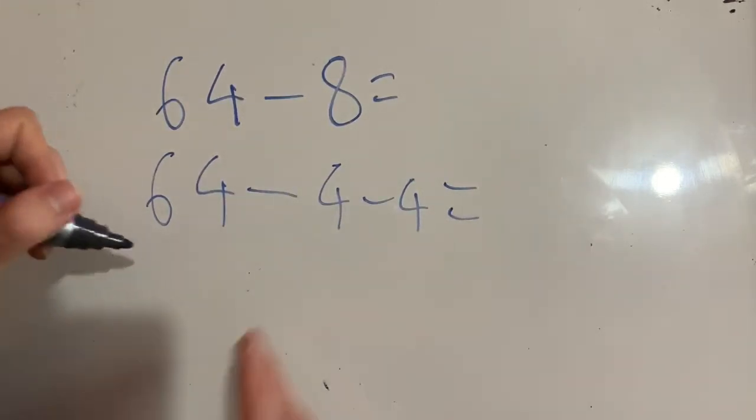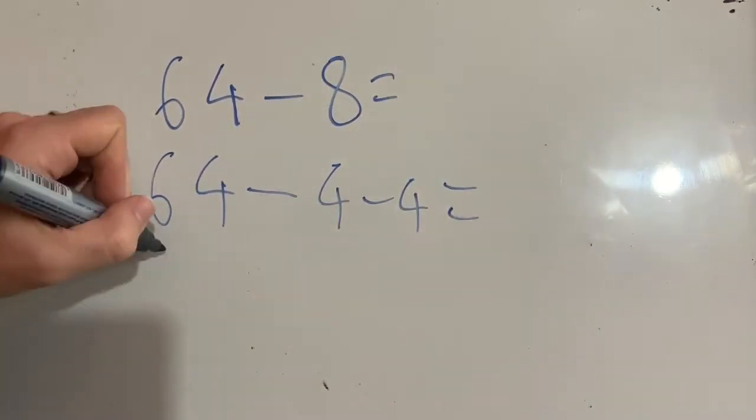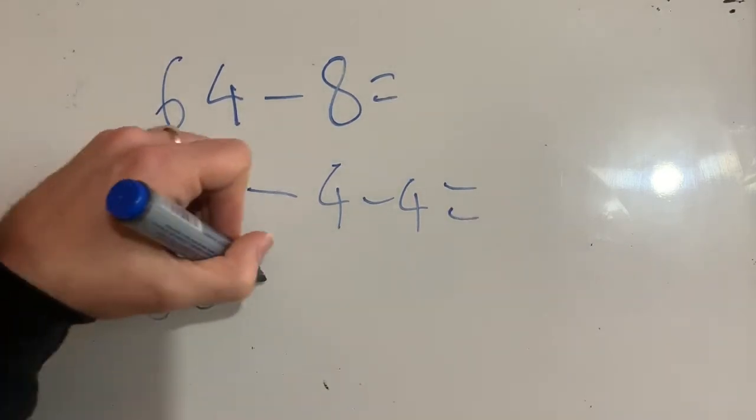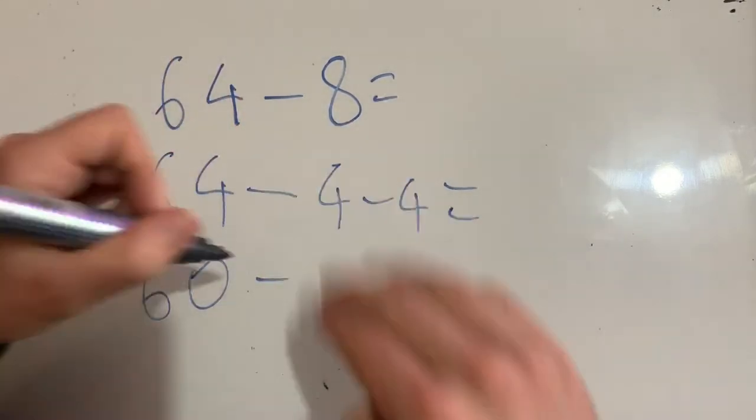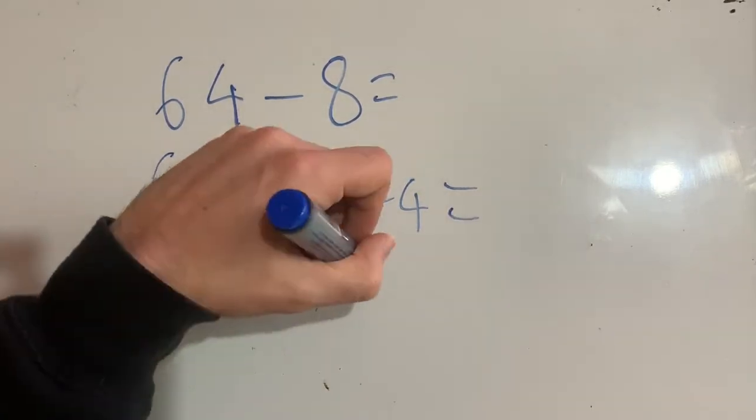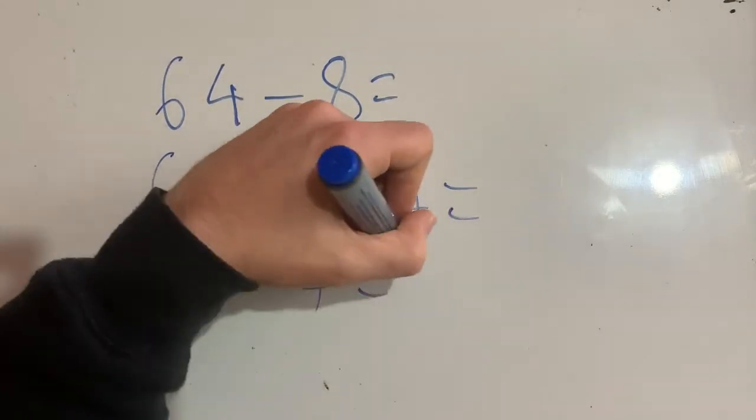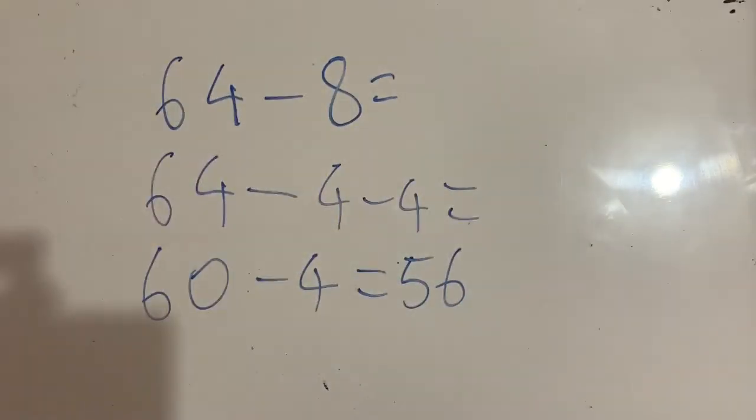Now I like to work down my page. So 64 minus 4, let's just deal with that first, is 60. And now I've gotten rid of that 4, so now I've just got this 4 left. 60 minus 4 is—well, I know that 10 minus 4 is 6, so 60 minus 4 must be 56. And it really is as simple as that.